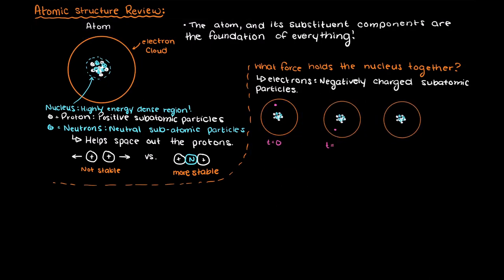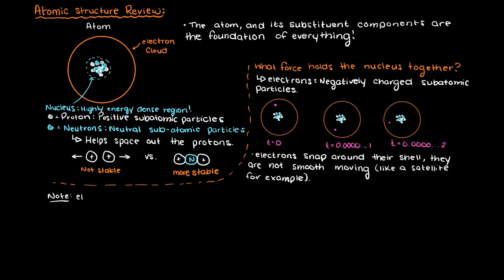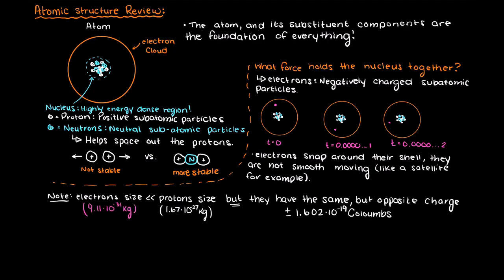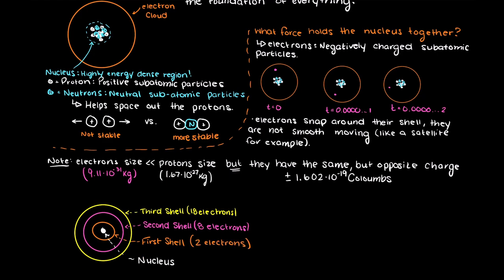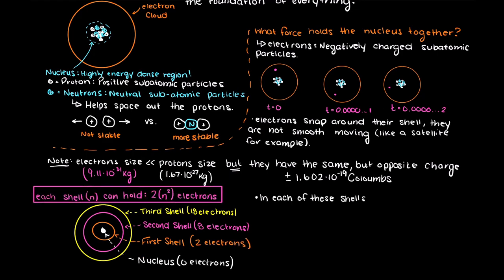These electrons snap around in various regions around the nucleus. Although much smaller than a proton, these small electrons hold a similar but opposite charge. The electrons are in what is called the electron cloud, or the electron shells. Within the shell, there are various orbitals, which have various shapes that allow two electrons each to orbit the central atomic nucleus.